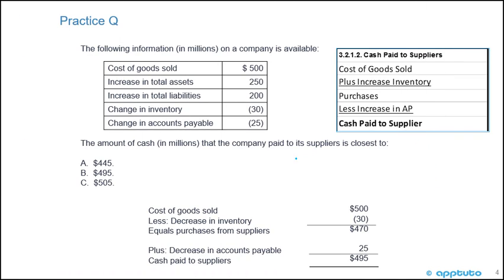This question is regarding direct cash flows because we need to look at how much the company paid to its suppliers. As we've seen in the previous LOS, you have to have this formula memorized: cash paid to suppliers equals cost of goods sold plus the increase in inventory — that gives us our purchases — then less the increase in accounts payable, and that gives you your cash paid to your suppliers.